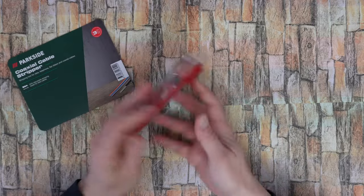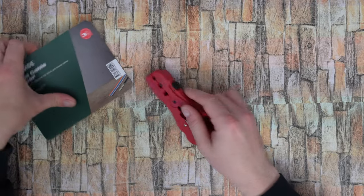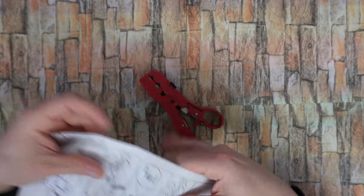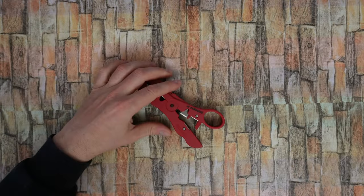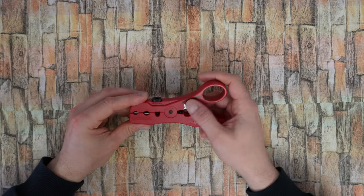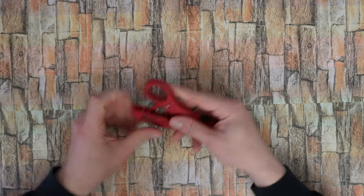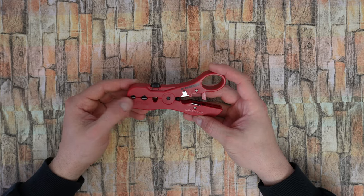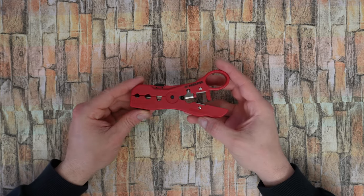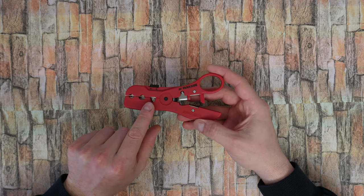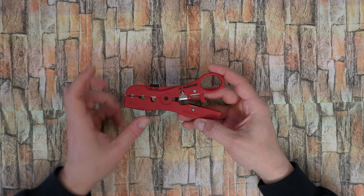We have the instructions. There it is - red color, black logo, Parkside. At the front we have markings for RJ59, 6, 7, and 11. Here it is for the Cat5, Cat7, UTP and STP.